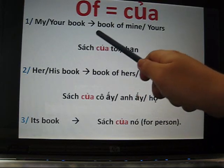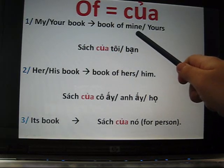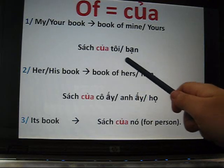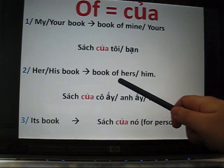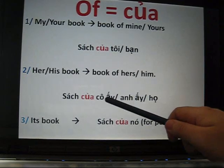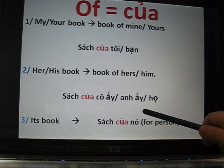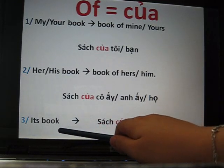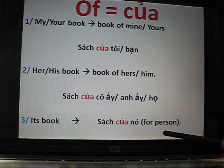Sách của tôi or sách của bạn. Her book or his book — we understand these as 'book of hers' or 'book of him.' So: sách của cô ấy, sách của anh ấy. Their book is sách của họ. And its book — for a thing — is sách của nó.